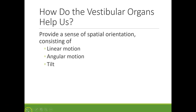Our vestibular organs really provide us a sense of spatial orientation. There are a couple of different unique modalities associated with our sense of spatial orientation: linear motion, angular motion, and tilt. Linear motion tends to happen if we are moving in a vehicle and then somebody suddenly slams on the brakes — a sudden deceleration. Angular motion is like what you might experience on a roller coaster or a tilt-a-whirl. And tilt is what you experience when you nod your head up and down. During these lectures, you might occasionally hear me say to nod your head — if your family or friends walk by and look at you kind of weird, tell them Dr. Gilchrist told you to.